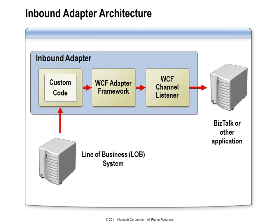The inbound architecture allows BizTalk or other applications to listen for messages from your line of business system. Your custom code is responsible for listening, monitoring, or polling that system and getting notified when relevant data needs to be pulled out. The data gets handed off to the adapter framework, passed up through the WCF channel system, and a BizTalk or other application can be listening for that message. You can host a service in your own .NET application or use a BizTalk receive adapter to monitor your system for those events.